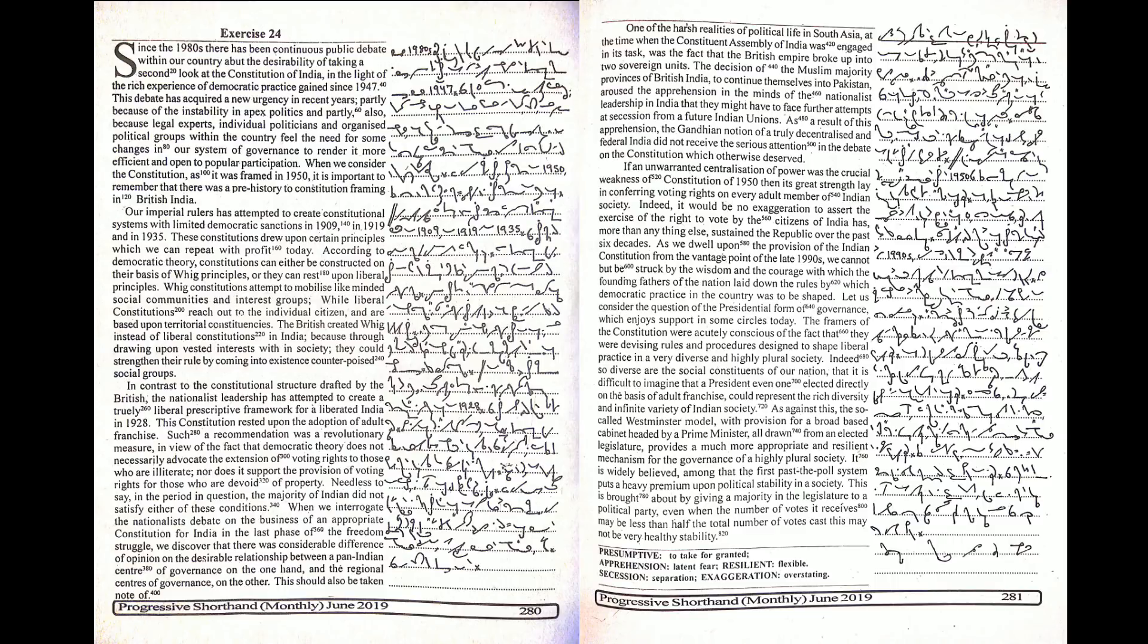Our imperial rulers had attempted to create constitutional systems with limited democratic sanctions in 1909, in 1919 and in 1935. These constitutions drew upon certain principles which we can repeat with profit today.